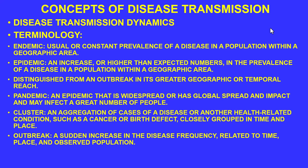An outbreak is a sudden increase in disease frequency related to time, place, and observed population. A communicable disease can suddenly spread within a very short period of time from a few people to a much larger grouping — a town or a state.